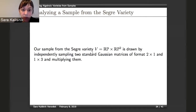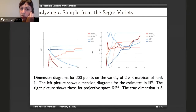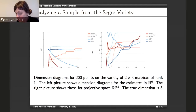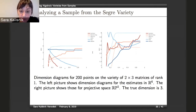The next sample comes from the Segre variety. We sample two standard Gaussian matrices of format 2×1 and 1×3 and multiply them, getting rank-one 2×3 matrices. This is one of the dimension diagrams from before, but it's mainly to demonstrate that when we have a projective variety, it does make sense to use Fubini-Study distance rather than Euclidean distance — and we did the same for computing persistent homology, since tools like Ripser take a distance matrix and it makes sense to use Fubini-Study for data that naturally lives in projective space.